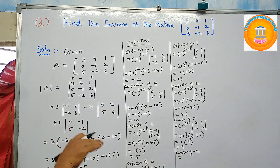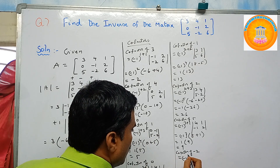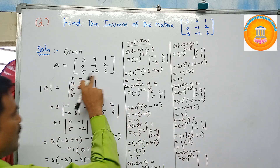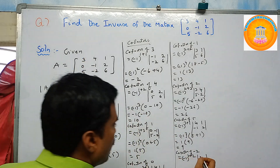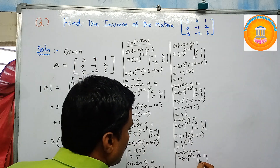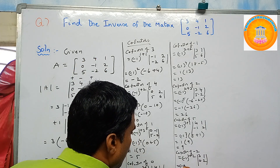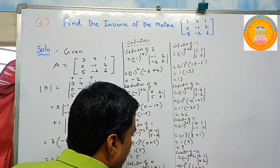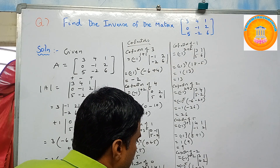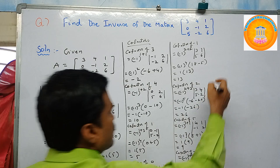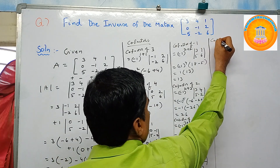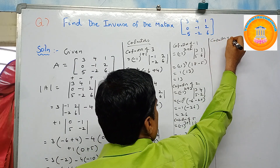Cofactor of minus two: minus two is in the third row and second column, so i equals three, j equals two. Minus one to the power three plus two equals five. The minor is the determinant of three, one, zero, two, which equals three times two minus zero times one equals six. Since power five is odd, minus one times six gives cofactor of minus two equals minus six.